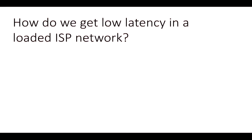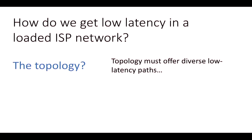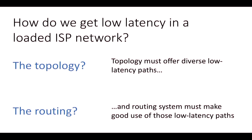How do we get low latency in a moderately loaded ISP network? We can start with topology—it must offer diverse low-latency paths—and then look at routing, where the routing system must be able to make use of such good paths. There is a clear dependency between the two, and to the best of our knowledge this dependency hasn't really been explicitly explored so far.